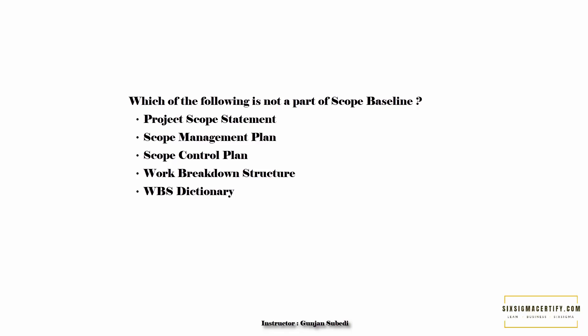The options are: project scope statement, scope management plan, scope control plan, work breakdown structure, and WBS dictionary. The answers are scope management plan and scope control plan — these are not part of scope baseline.